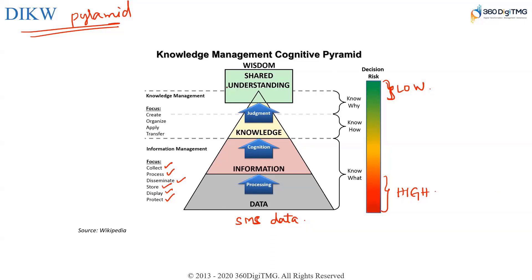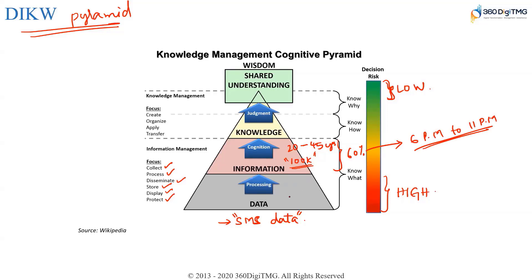Data and information together tell you what has been happening. You process the raw data — for example SMS data — and draw information from it. Information could be: there are 100,000 telecom customers all in the age group of 20 to 45 years, and 60% of them use internet service in the evening from 6 PM to 11 PM. These are the insights we draw from the data.